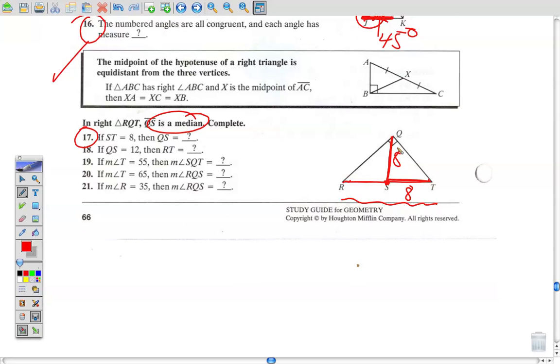Let's go down to number 20. This will be the last one that I go through. Number 20, if the measure of angle T equals 65, then the measure of angle RQS. This is a midpoint, right? So we know that this equals this. So notice that we have an isosceles triangle. If two sides are equal, the opposite angles are equal. Well, now can I figure out what this angle is? Yep. Because they add up to 90. 65 plus what is 90? 25. So RQS would be 25 degrees. And that's how these are working.